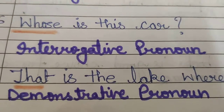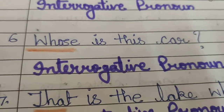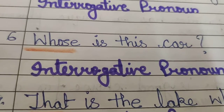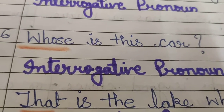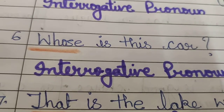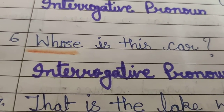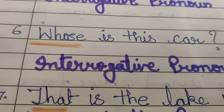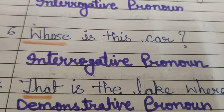Coming to the next part: That is the lake where we can go rowing. Now, 'that is the lake' — we are focusing on that lake. So 'that' is the demonstrative pronoun. We are not saying 'that lake'; if we say 'that lake', it becomes a demonstrative adjective. But we are saying 'that is the lake' — the verb comes after the demonstrative word, so here it is working as a demonstrative pronoun.